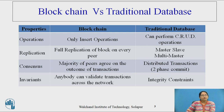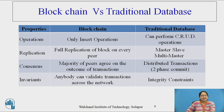In blockchain, a majority of peers working in that environment agree on the outcome of transactions. In a traditional database, a two-phase commit protocol is used to check working in a distributed environment. Anybody can validate transactions across the network — that is a main point. Every network peer has the authority to validate transactions. In a traditional database, there are some integrity constraints.